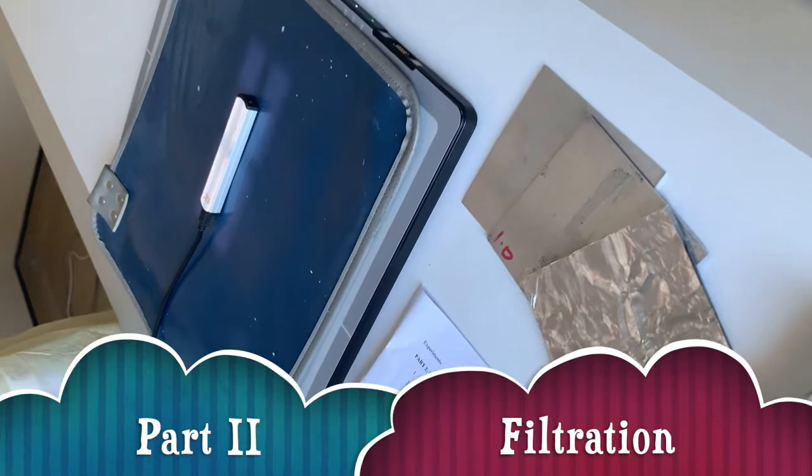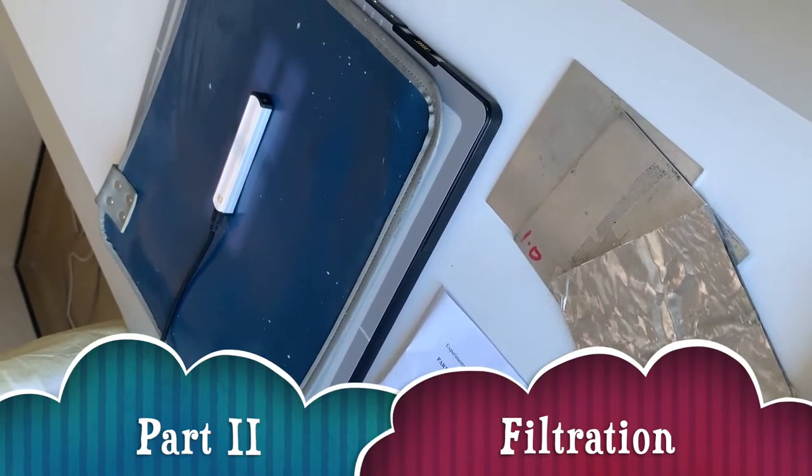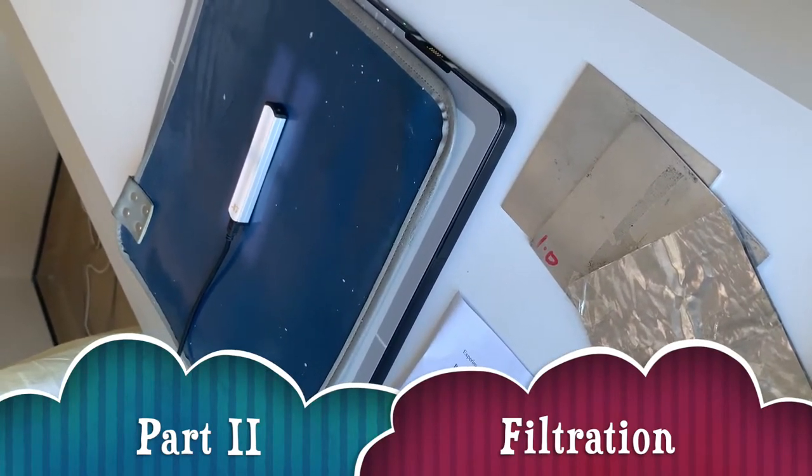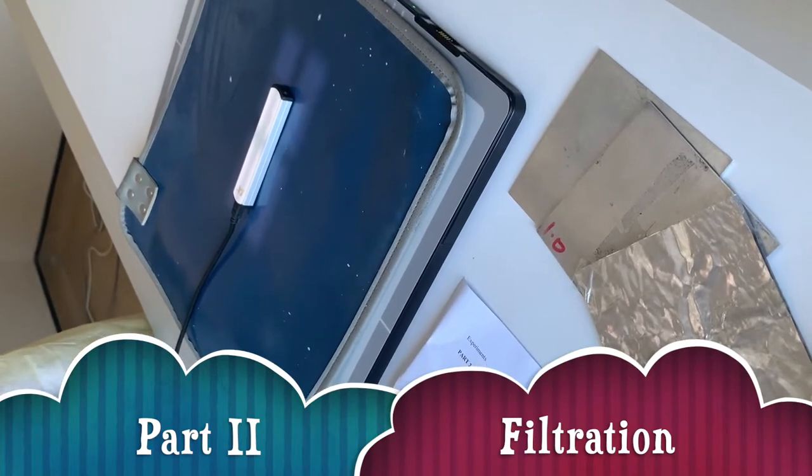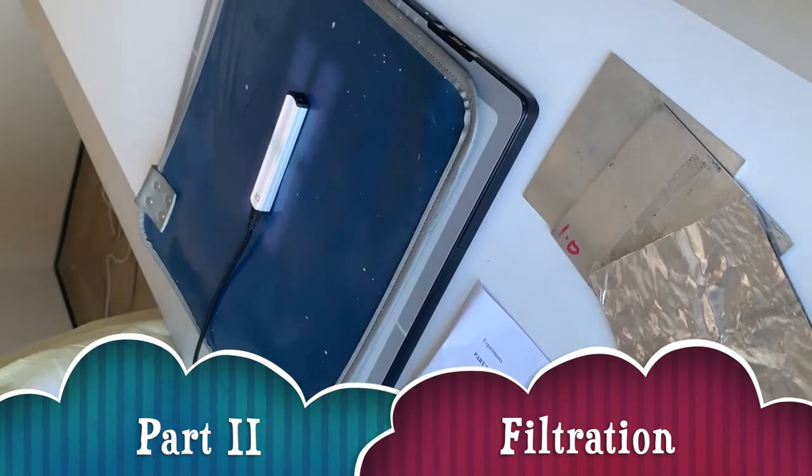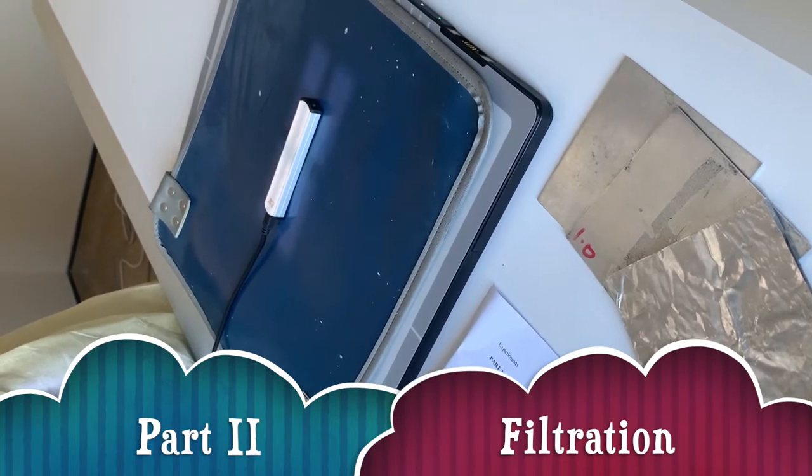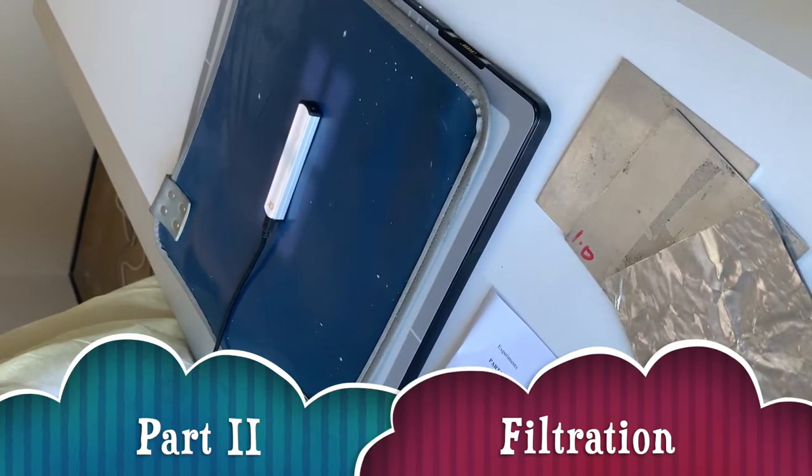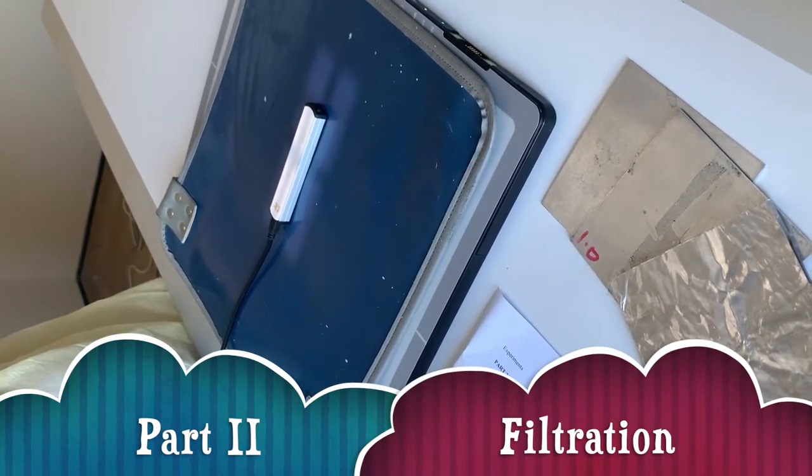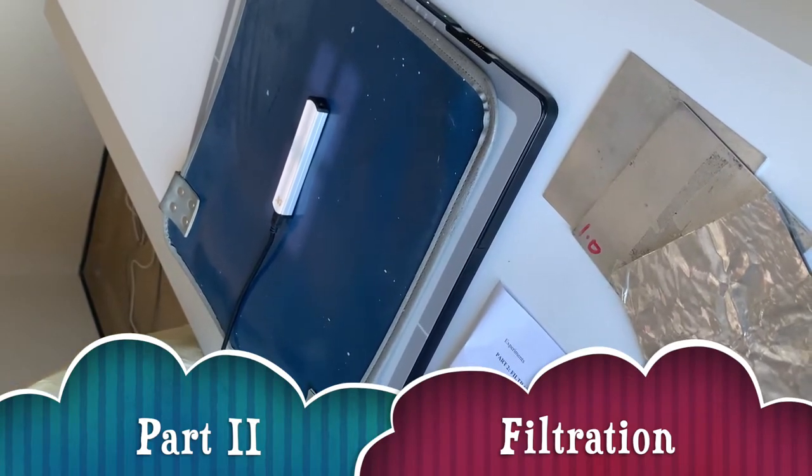After we've measured our half value layer, we are doing part two of this experiment, which is filtration. This is to check that the value measured is exactly the same as the one provided by the manufacturer of the machine written on the X-ray tube.